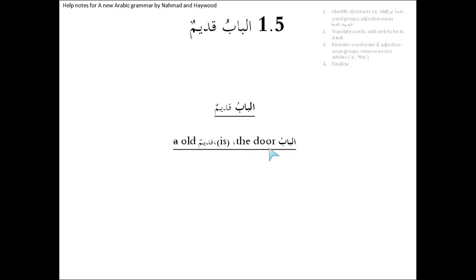We can see that أَلْبَابُ has أَلِفْ لَام and a single ضَمَّة — this is definite. قَدِيمٌ has a تَنْوِين, so it is a noun and it is indefinite. We're shifting from a definite word to an indefinite word. We know this is الجُمْلَة الْإِسْمِيَّة because it begins with a noun. Therefore أَلْبَابُ is the مُبْتَدَ, the subject, and قَدِيمٌ is the خَبْر. Translation: 'The door' — we place 'is' between the مُبْتَدَ and the خَبْر — 'The door is old.'